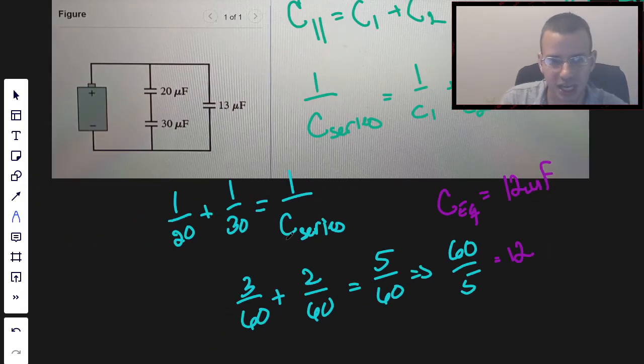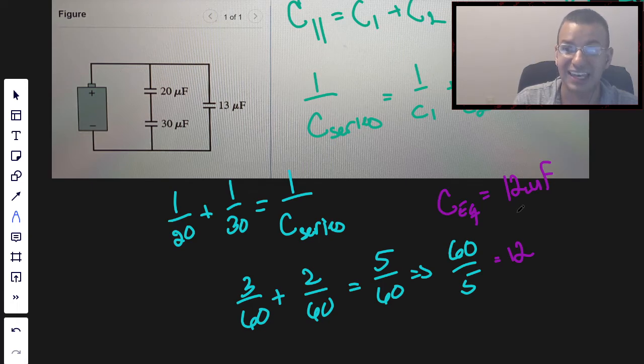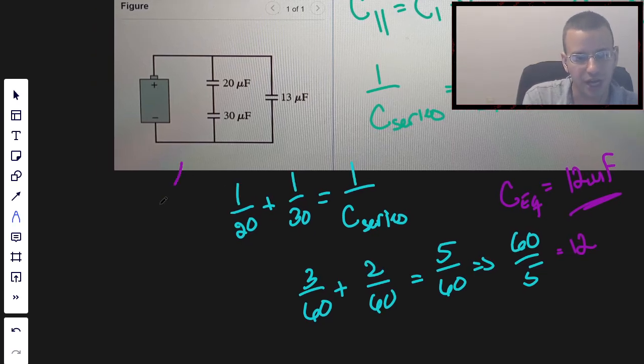So one good thing to check is when you add reciprocals and take the reciprocal, you should get a number that is less than either of the originals. So 12 is less than 20, which is less than 30. So we're not necessarily right, but we're not obviously wrong, which is a good start.